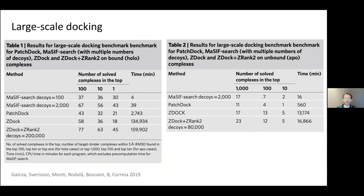Another experiment uses unbound structures, where the difference is that when proteins bind their 3D conformation can change — your target is usually in its unbound state and may change significantly. Results here are slightly worse since it's a more difficult problem, but performance is still better than other algorithms and the method is much, much faster.